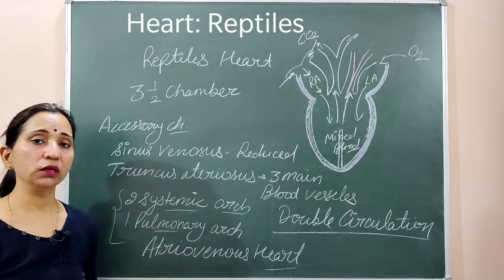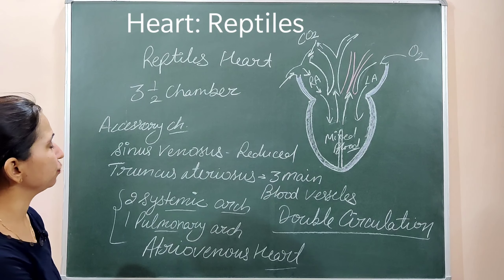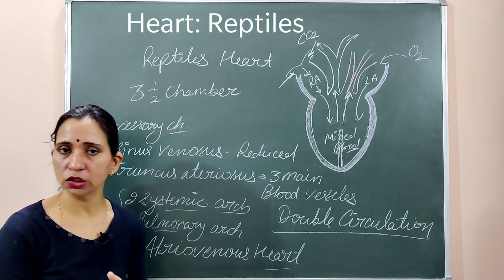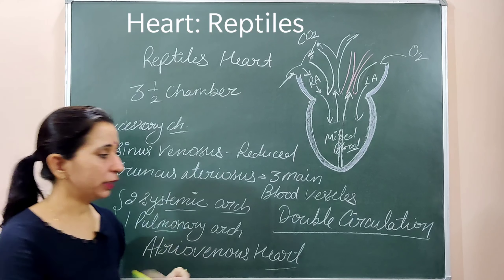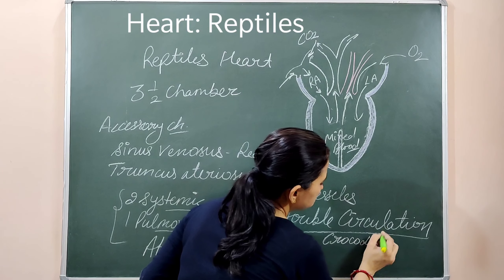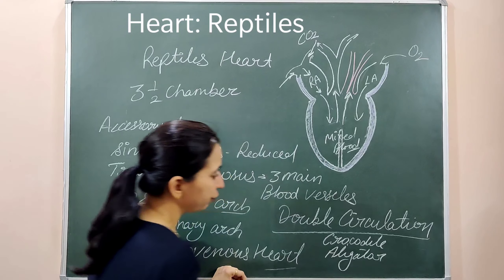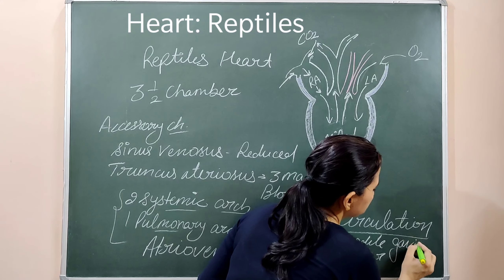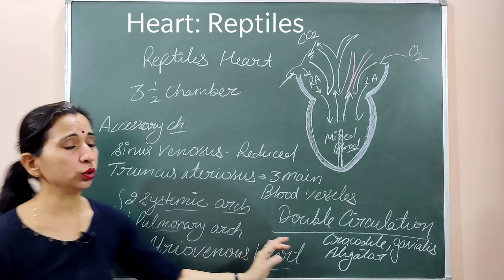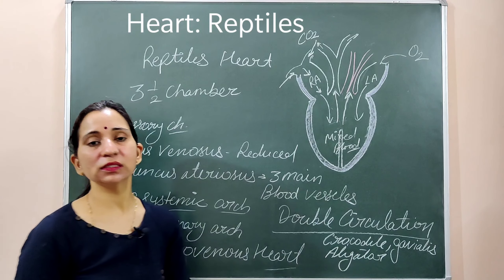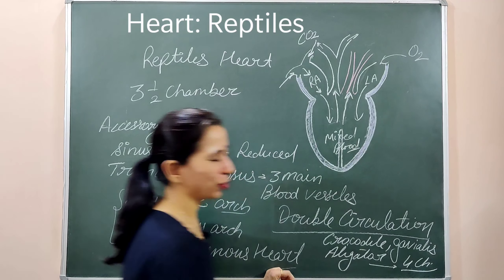This is about the reptilian heart, which is a three-and-a-half chambered heart, but there are exceptions. The exceptions are crocodiles, alligators, and gavialis — these are reptiles that show a completely divided four-chambered heart. All remaining reptiles have the three-and-a-half chambered heart.